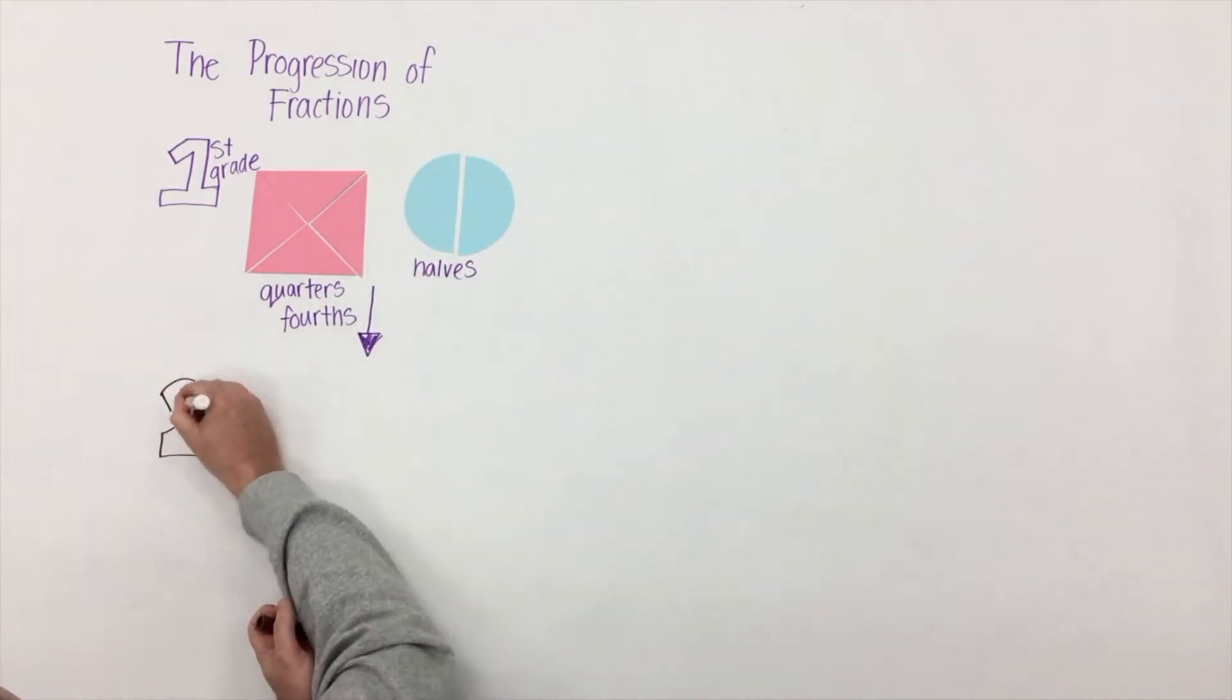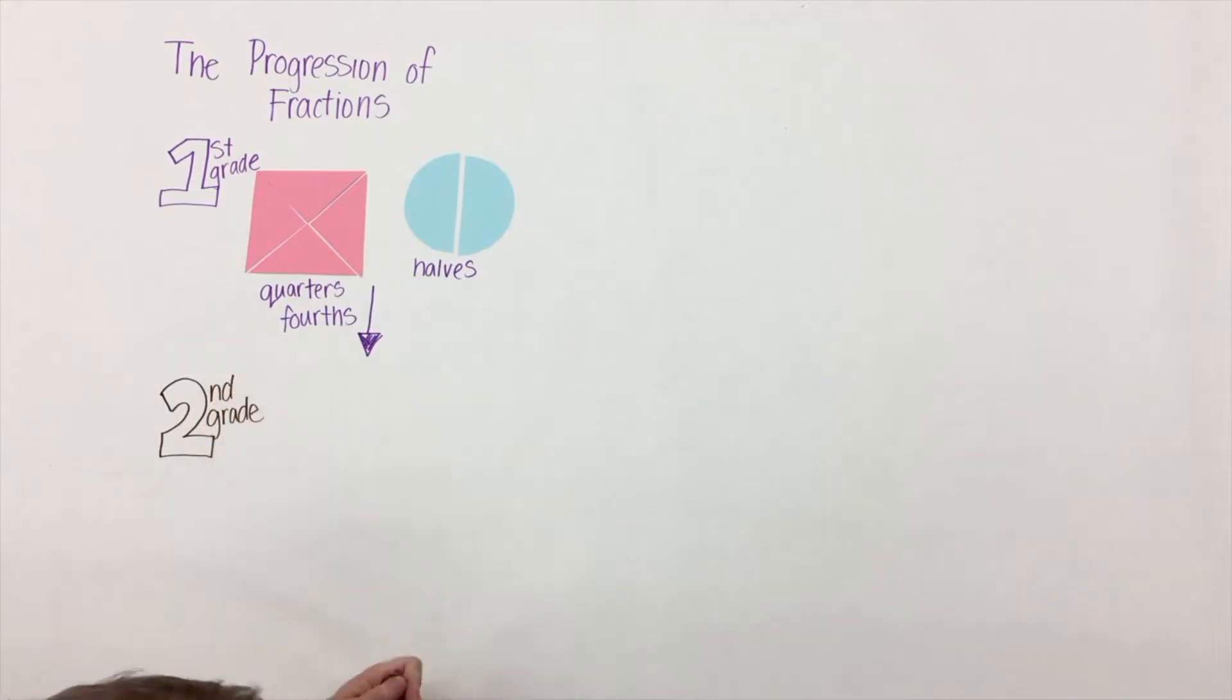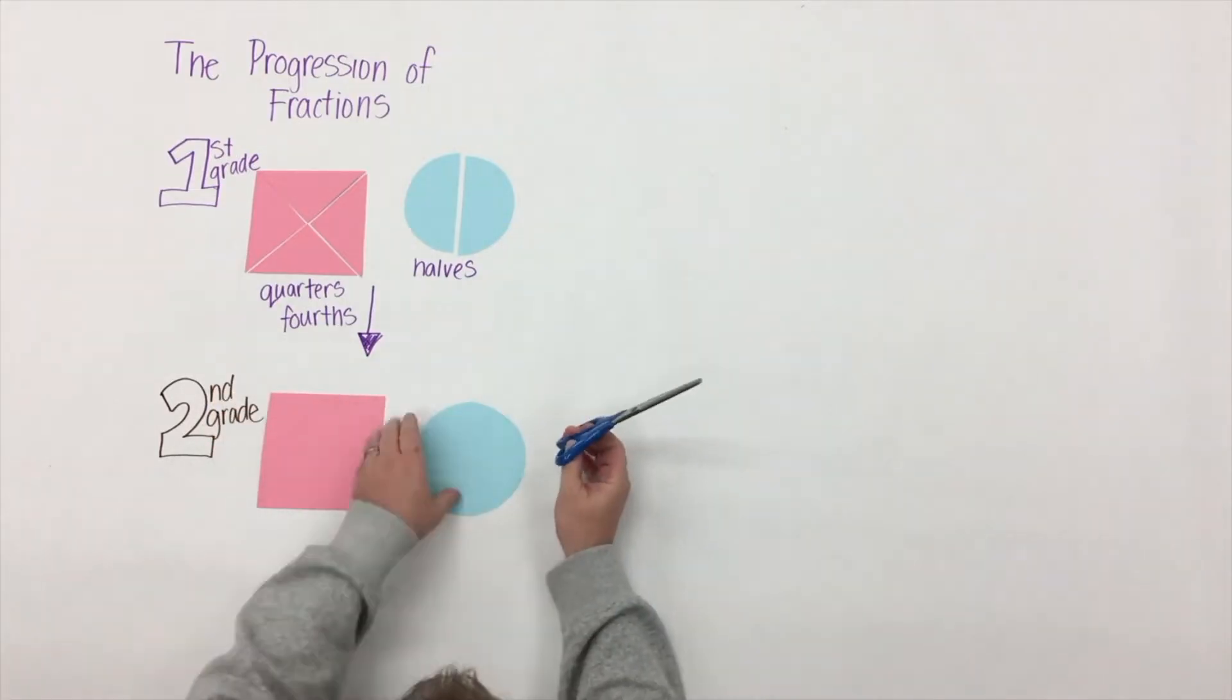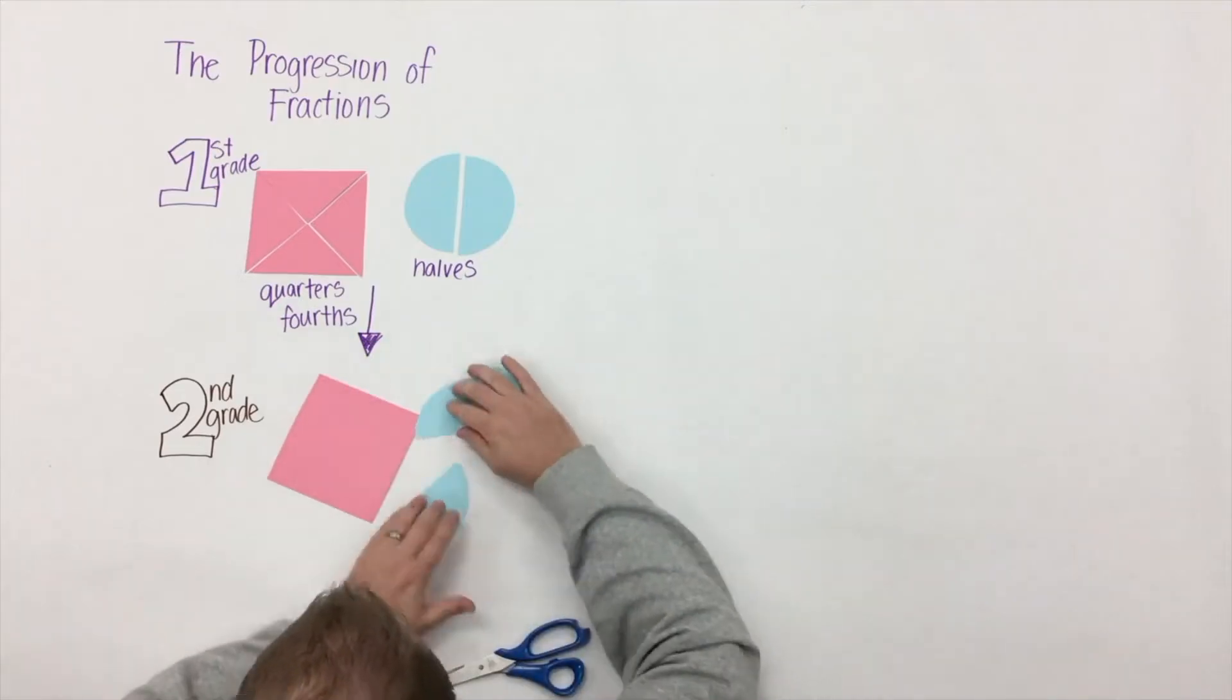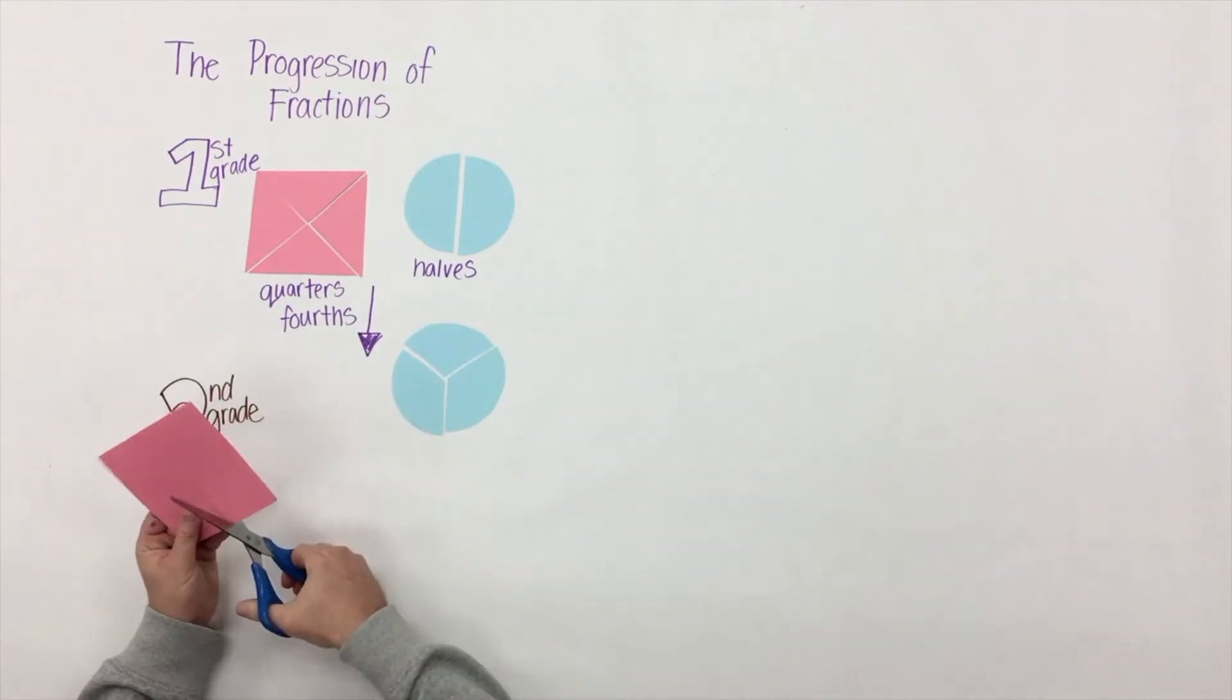In second grade, students build on their understanding of halves, quarters, and fourths, and they're introduced to the idea of thirds. Again, they should be using that term thirds or a third of.